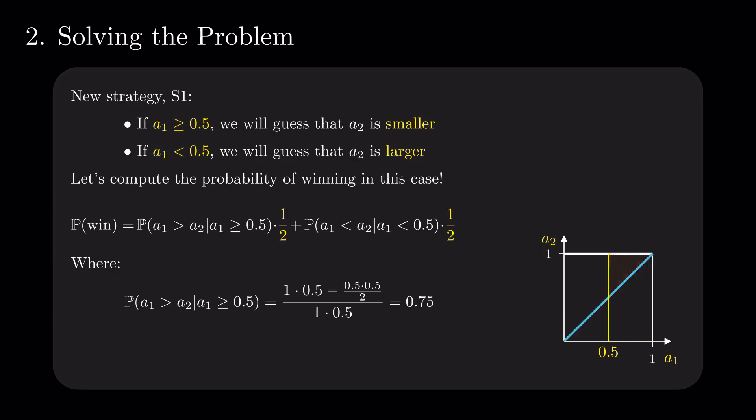The remaining term in our formula is computed similarly, the size of the green area, where A1 is less than A2 and A1 is less than 0.5, over the entire restricted area, where A1 is less than 0.5.